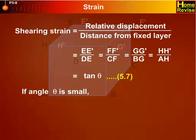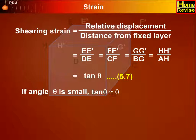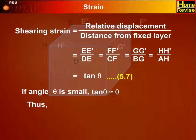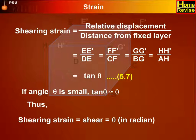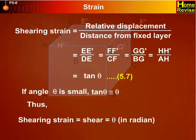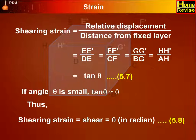If angle θ is small, tan θ is approximately equal to θ. Thus, shearing strain equals the angle of shear, that is θ in radians. This is equation 5.8.